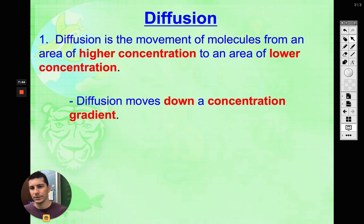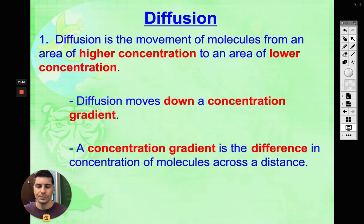So let's begin with diffusion. Diffusion is going to be the movement of molecules, and I'm going to show you a bunch of examples with this, from an area of high concentration to an area of low concentration. So what we say is diffusion moves down its concentration gradient. There's going to be a difference usually between our molecules on one side and the other side. We are going to move to where there is a lower amount.